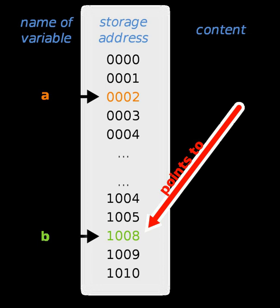As a pointer allows a program to attempt to access an object that may not be defined, pointers can be the origin of a variety of programming errors. However, the usefulness of pointers is so great that it can be difficult to perform programming tasks without them. Consequently, many languages have created constructs designed to provide some of the useful features of pointers without some of their pitfalls, also sometimes referred to as pointer hazards. In this context, pointers that directly address memory are referred to as raw pointers, by contrast with smart pointers or other variants.